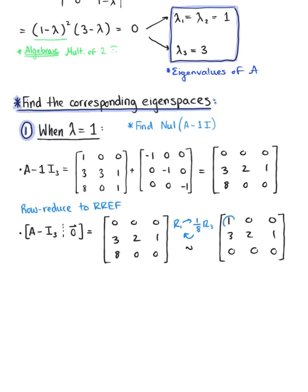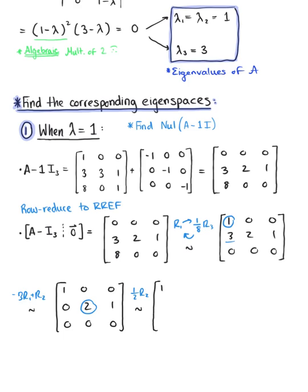Using our first pivot position, we eliminate the entry below it by doing minus 3 times the first row plus the second row, leaving us with 1, 0, 0 / 0, 2, 1 / 0, 0, 0. Moving to the second pivot position, we multiply by a scalar multiple of 1/2, giving us the row reduced echelon form: 1, 0, 0 / 0, 1, 1/2 / 0, 0, 0.